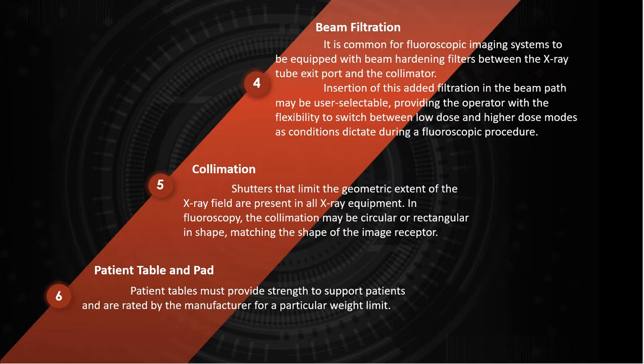Now I will talk about collimation. Collimation shutters that limit the geometric extent of the x-ray field are present in all x-ray equipment. In fluoroscopy, the collimation may be circular or rectangular in shape, matching the shape of the imaging receptor. When the operator selects a field of view, the collimation blade positions automatically move under motor control to be just slightly larger than the visible field.